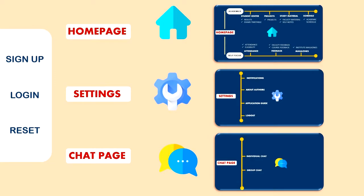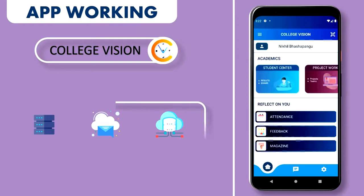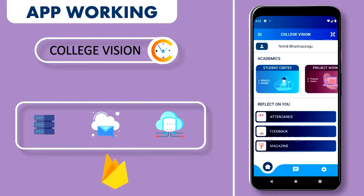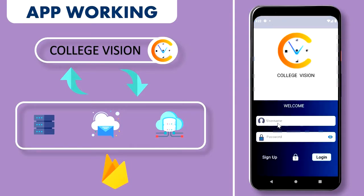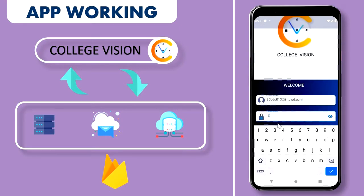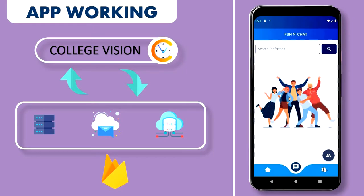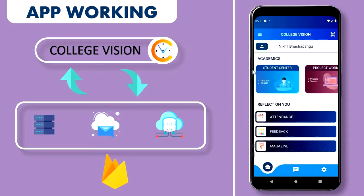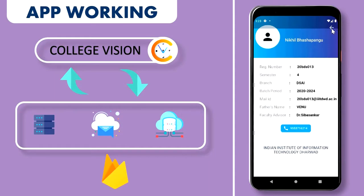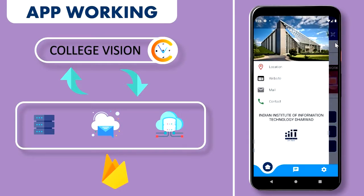Now let us see the working of the application. Data transfer takes place between the app and cloud storage and database according to the functionality being used. On the login page, the student enters their institute mail ID and password and clicks login to be redirected to the homepage. On the homepage, the student's name and ID are displayed. The page includes details about the college, college website, location, and more.